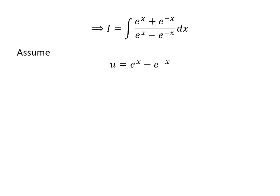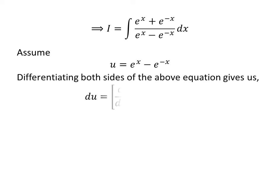We will apply the substitution method to solve the integral. Let us assume u is equal to e^x minus e^(-x). Taking the differential of both sides gives us du equal to the derivative of (e^x - e^(-x)) with respect to x, times dx.